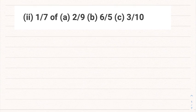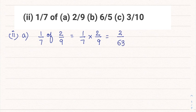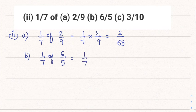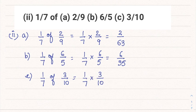Second part: 1/7 of (a) 2/9 can be written as 1/7 into 2/9 which is 2/63. (b) 1/7 of 6/5 means 1/7 multiplied by 6/5, that is 6/35. (c) 1/7 of 3/10 is 1/7 multiplied by 3/10, and the answer here is 3/70.